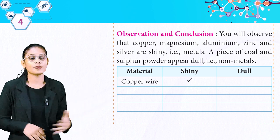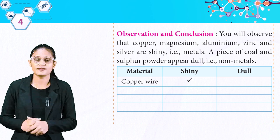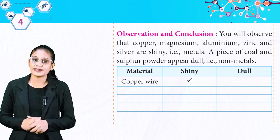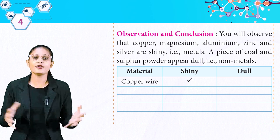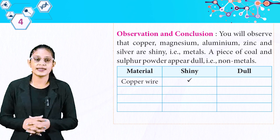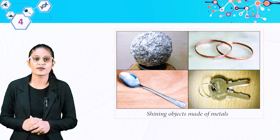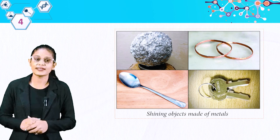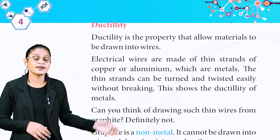That's how you have to prepare the table. So students, metals are shiny and non-metals are not shiny. Look at this picture — shiny objects made of metals.